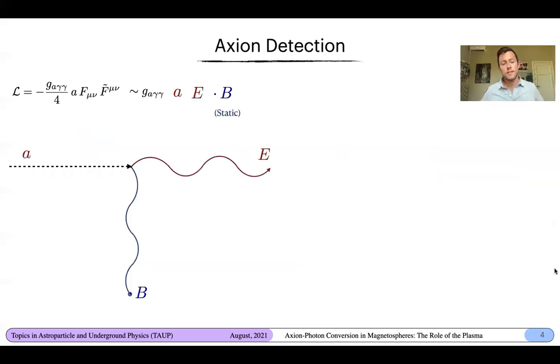Now, how do we go and detect these axions? The most promising way is to exploit the coupling of the axion to electromagnetism. And the axion couples via this FF dual field strength tensor, which is nothing more than a coupling to the combination of the electric field dotted into the magnetic field. So if we go to an environment where we have a static background magnetic field, what this tells us is that the axion can actually directly convert into a photon and vice versa.